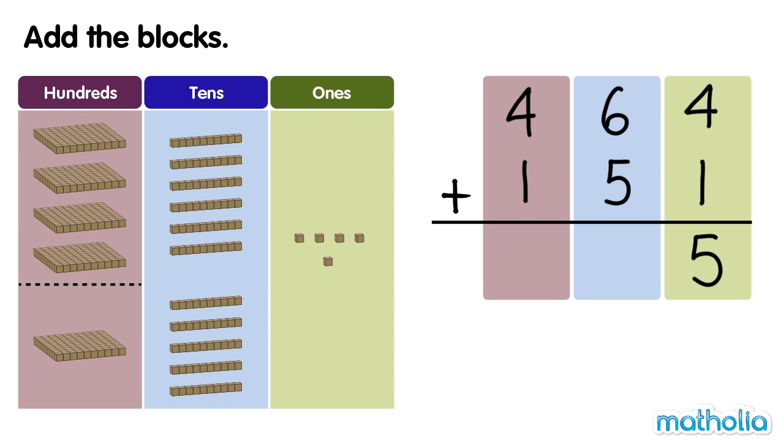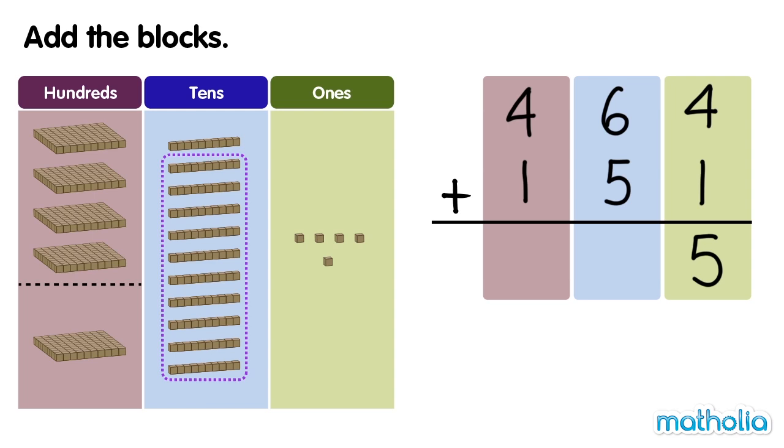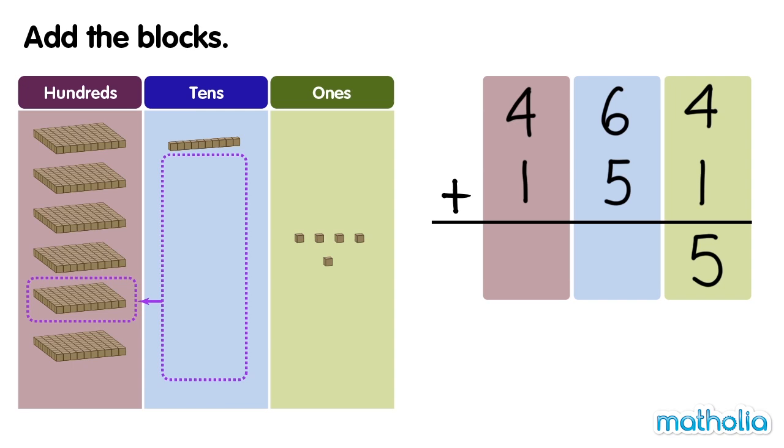Next we add the tens. 6 tens plus 5 tens equals 11 tens. We can regroup 10 tens into 1 hundred. Now we have 1 ten and 1 hundred.